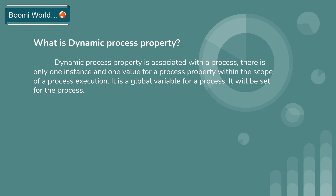What is dynamic process property? Dynamic process property is associated with a process — there is only one instance and one value for a dynamic process property within the scope of a process execution. It is a global variable for a process. Once you set a dynamic process property, you can use it wherever you want within the scope of the process execution.